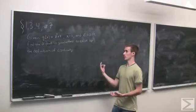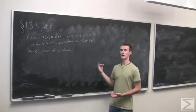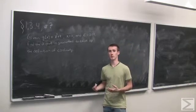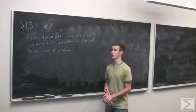We're asked to find the delta. So we're given a function, a point, and an epsilon. We're asked to find the delta that corresponds to it, that's guaranteed to exist by the definition of continuity.